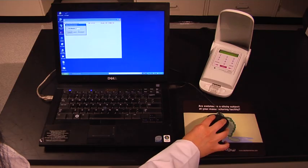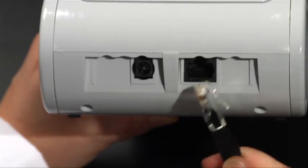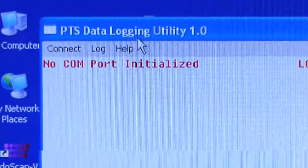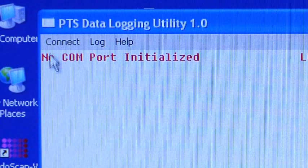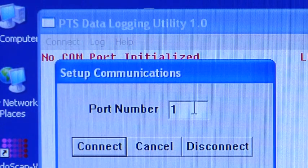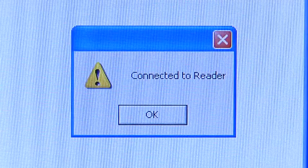In order to download the results to your computer, follow these simple steps. Step 1: Connect the cable provided in the packaging with the PTS from the back of the reader to your PC. Step 2: Select Connect, then choose the COM port your PTS Reader is connected to in the Setup Communications window. At the end, click on the Connect button to connect to the reader.